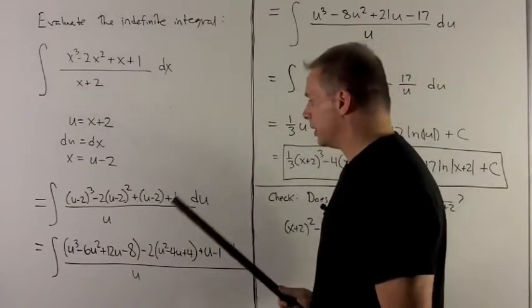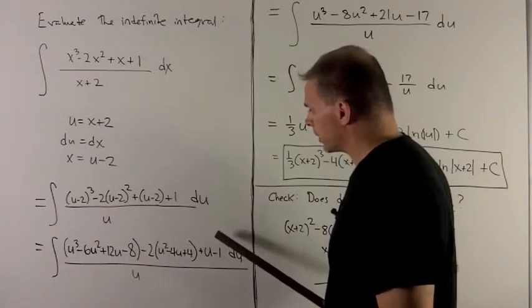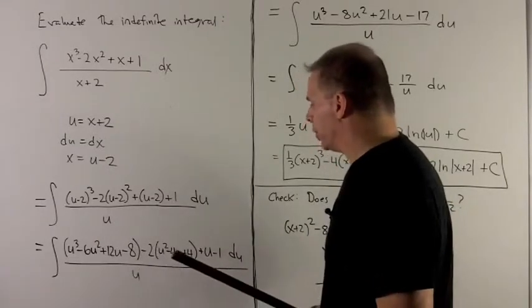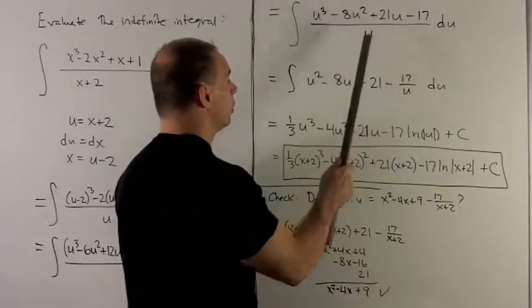Let's take a look. I expand each of these powers, put that over u. When I clean everything up, I'm looking at this polynomial over u.